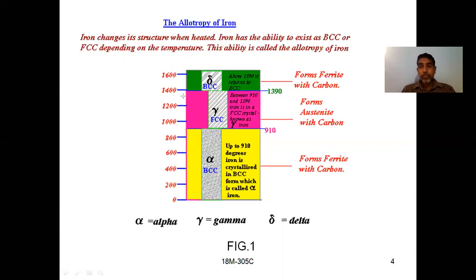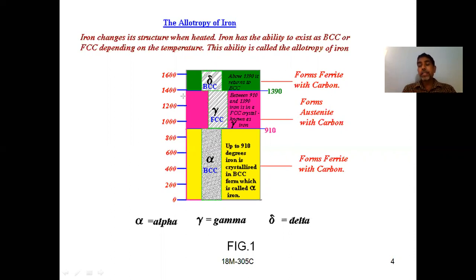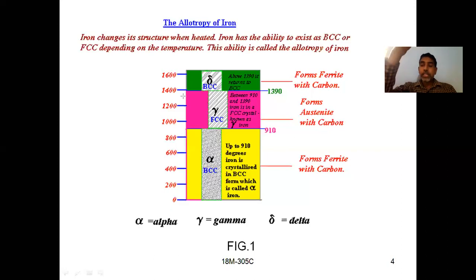We also discussed allotropy, which is related to polymorphism. If the polymorphic change is reversible, then we can call it allotropy. For example, if you take the allotropic forms of iron, you are having different crystal structures at different temperatures — delta iron, gamma iron, and alpha iron — having FCC and BCC structures. If the process going from top to bottom is reversible from bottom to top also, then we can say it is allotropy.